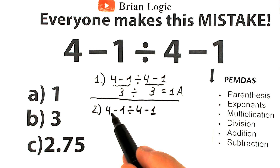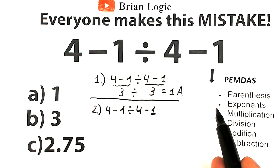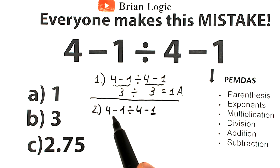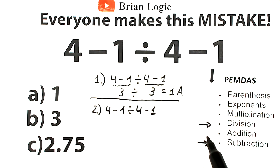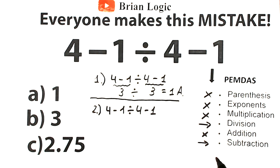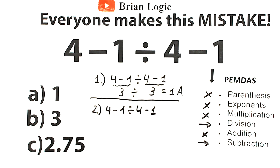So how do we evaluate this expression? PEMDAS works from top to bottom: first evaluate expressions inside parentheses, then exponents, then multiplication and division as a group, and finally addition and subtraction as a group. Higher position means higher priority. We scan our challenge: we have subtraction and division. Division has higher priority than subtraction, so we must start with division.